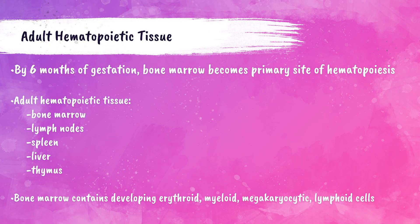To recap: 19 days after fertilization, hematopoiesis starts in the yolk sac. About four to five weeks after fertilization, it transitions to the liver temporarily before establishing definitive hematopoiesis in the bone marrow and thymus at around five months. By six months after fertilization, the bone marrow becomes the primary site of hematopoiesis and remains that way.